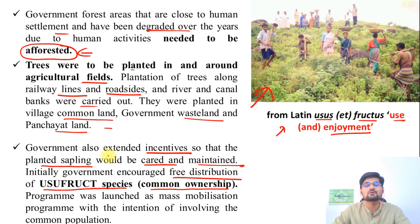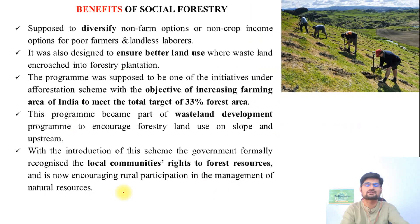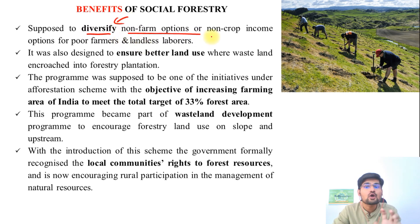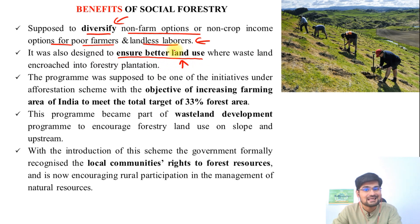This program was launched as a mass mobilization program, and its intention was to involve common people — that's why it's called social forestry. The first important benefit is that it aimed to diversify non-farm income options for poor farmers and landless laborers. Farm options relate mostly to agriculture and horticulture, but social forestry provides alternatives beyond crop income. It was also designed to ensure better land use, leading to environmental balance, with wasteland being encroached by forestry plantation.